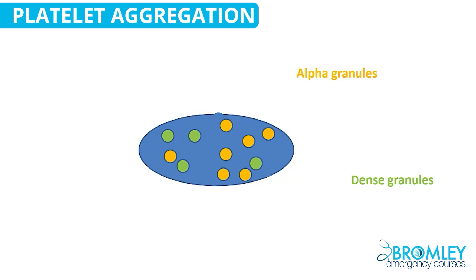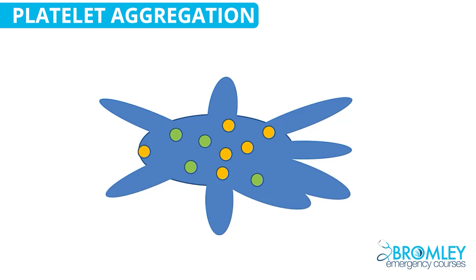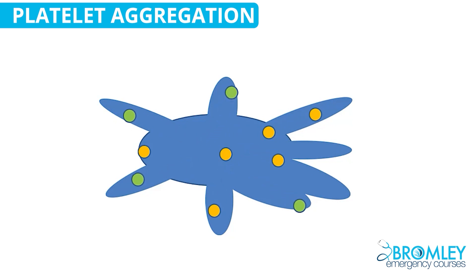Platelets circulate around in the bloodstream, tending to move towards the outer part of the stream, close to the endothelium. If there's an injury that exposes collagen, the platelet starts to activate. The first thing that happens is a conformational change — it moves from being a disc to putting out pseudopodia and achieving an extended shape. At around the same time, the granules start to move towards the surface of the cell and release their contents into the surrounding area.